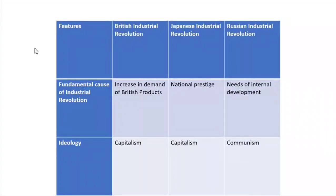In the case of the East Asian country Japan, the fundamental cause of industrial revolution was to raise and restore its national prestige. As explained in the last video, the industrial revolution in Japan has a background of national humiliation by an American ship captain. In order to restore its national prestige, the Japanese government intended to emerge as an industrial revolution power, and in such a way industrial revolution commenced in Japan.